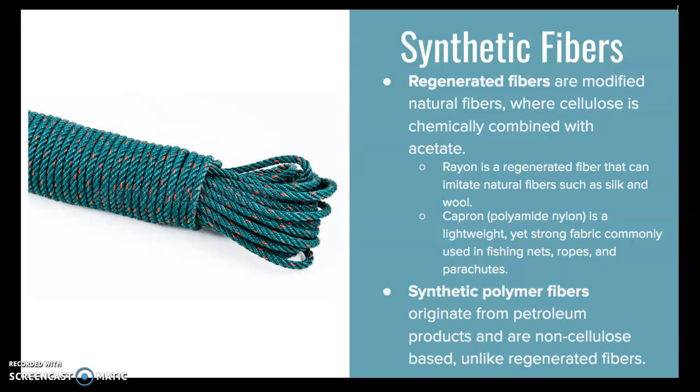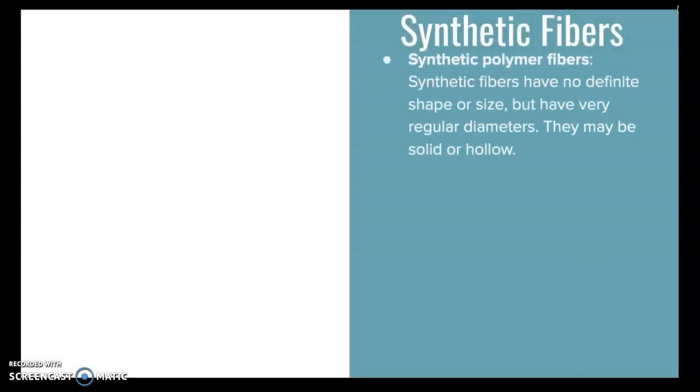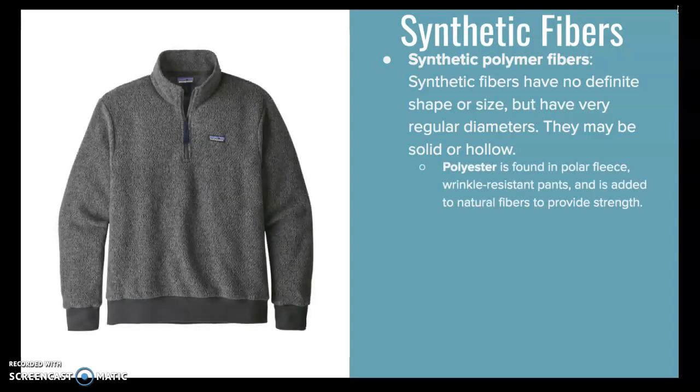Synthetic polymer fibers originate from petroleum products and are non-cellulose based unlike regenerated fibers. They have no definite shape or size but have very regular diameters, and they may be solid or hollow depending on their purpose. Polyester is found in polar fleece like in a Patagonia pullover, in wrinkle-resistant pants, and is added to natural fibers to provide strength.